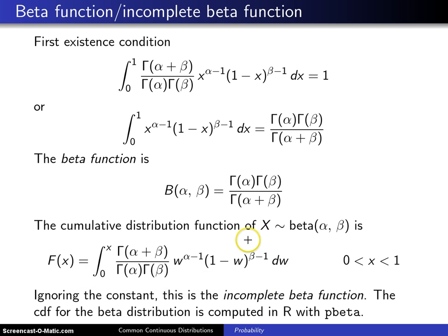It turns out that this does not have a closed form solution over the support 0 to 1. So if you were to ignore the constant out front, and here is that constant, then this would be known as the incomplete beta function.